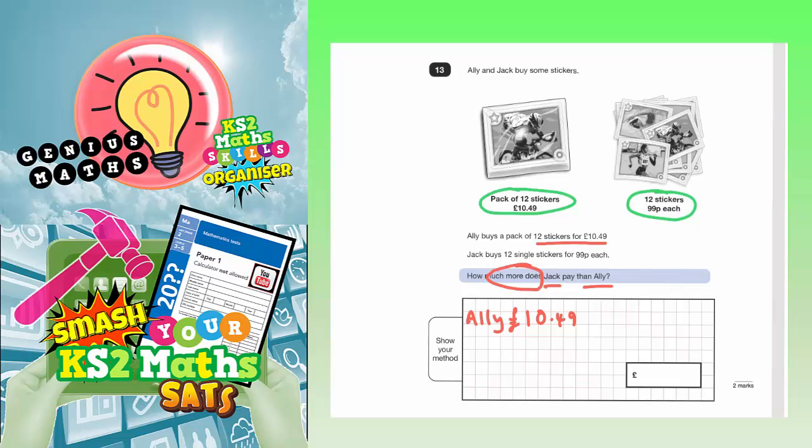So Jack buys 12 single stickers for 99p each. We basically want 12 times 99p. Well, it's going to be a lot easier to do 12 times £1.00, and then realize that we've basically made the 99p one penny more 12 times. So we would need to subtract the 12p. We've got 12 lots of a penny too much on that.